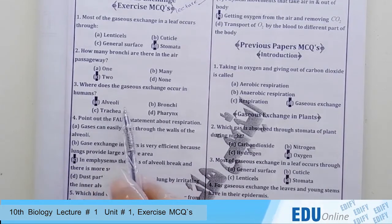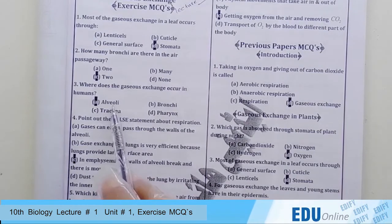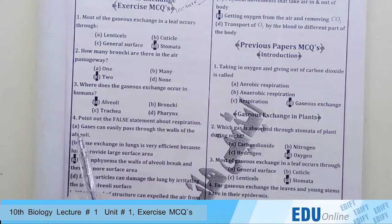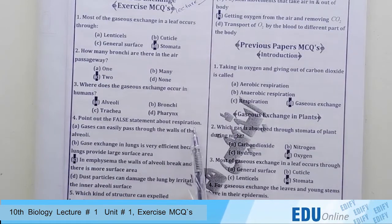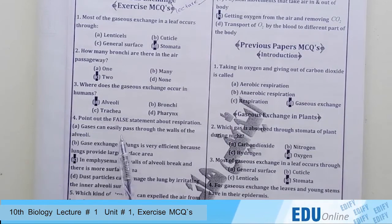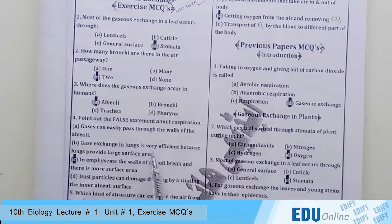The answer is alveoli. Alveoli are sac-like structures where gaseous exchange takes place. Question number four: point out the false statement about respiration. Options: gases can easily pass through the wall of the alveoli; gas exchange in lungs is very efficient because lungs provide large surface area.